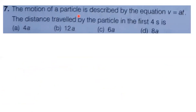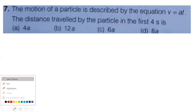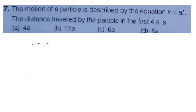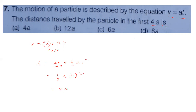Seventh question: the motion of a particle is described by v equals AT. Find the distance traveled in the first 4 seconds. Comparing with v equals u plus AT, if v equals AT then u equals 0. Distance S equals uT plus half AT squared; with u equals 0, S equals half A into 16 equals 8A. Seventh question: fourth option is correct.